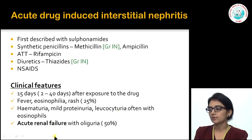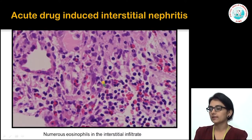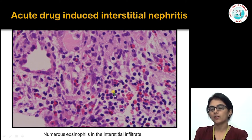Under the microscope this is definitely an acute interstitial nephritis with a lot of eosinophils hitting the tubules causing tubulitis — eosinophils are the hallmark of acute drug-induced interstitial nephritis. In some cases, for example with methicillin, you can see ill-defined granulomas.